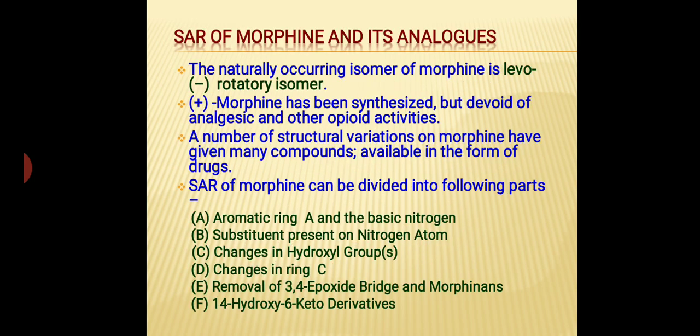Now we talk about the SAR of morphine and its analogs. The naturally occurring isomer of morphine is the levorotatory isomer. Dextrorotatory morphine has been synthesized but it is devoid of analgesic and other opioid receptor activities. A number of structural variations of morphine have given many compounds that are available in the form of drugs.